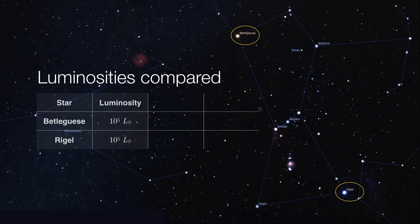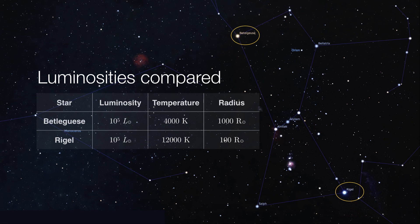Betelgeuse and Rigel both have very approximately the same luminosities. And yet we've already shown that Betelgeuse has a lower surface temperature. Yet, because Betelgeuse has a larger radius, that's able to help it compensate for its overall lower temperature. Thus, the two stars have roughly similar luminosities.